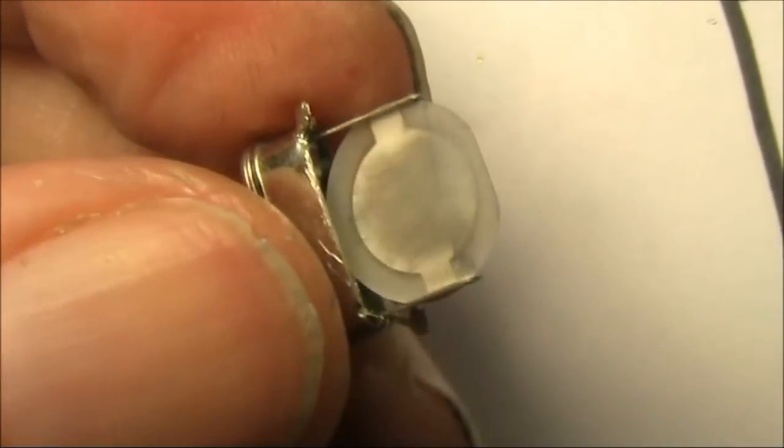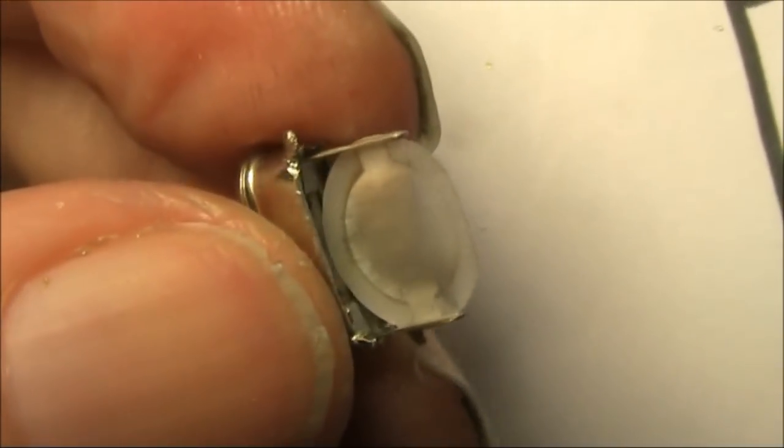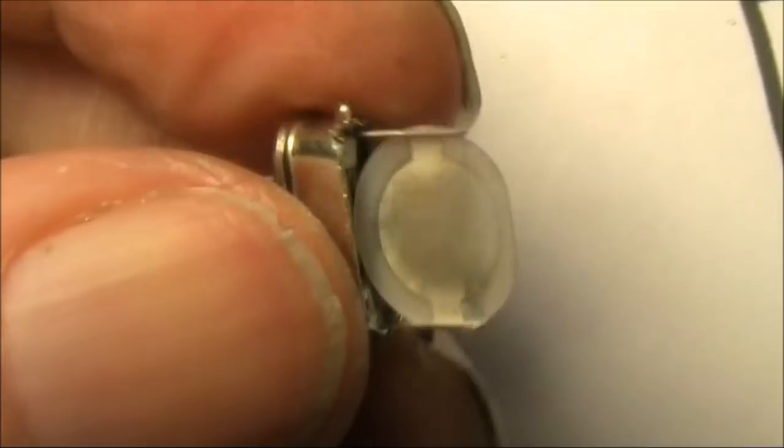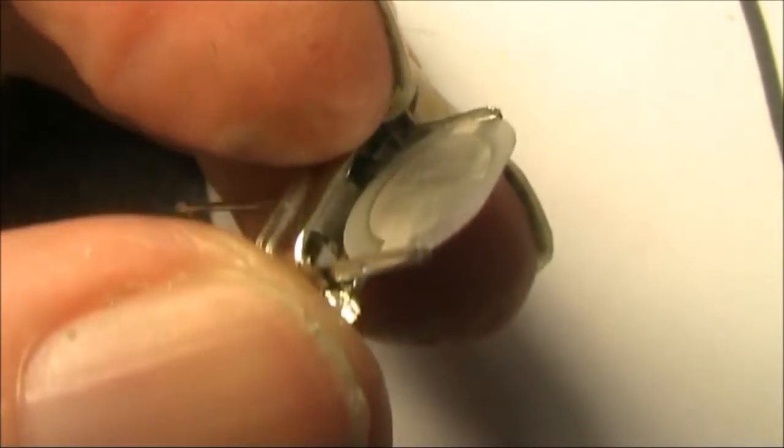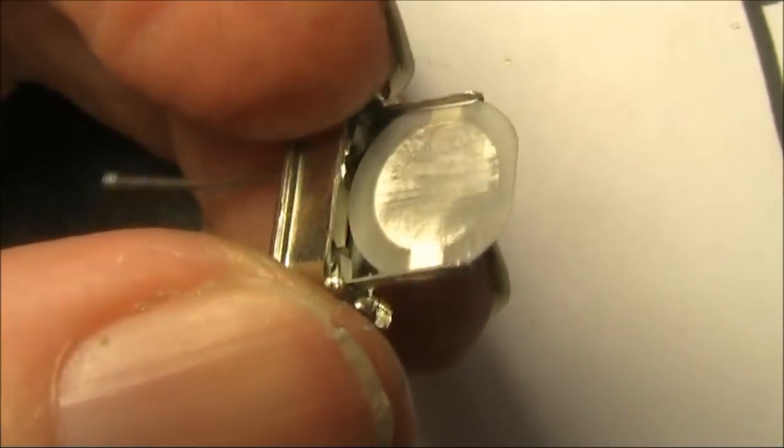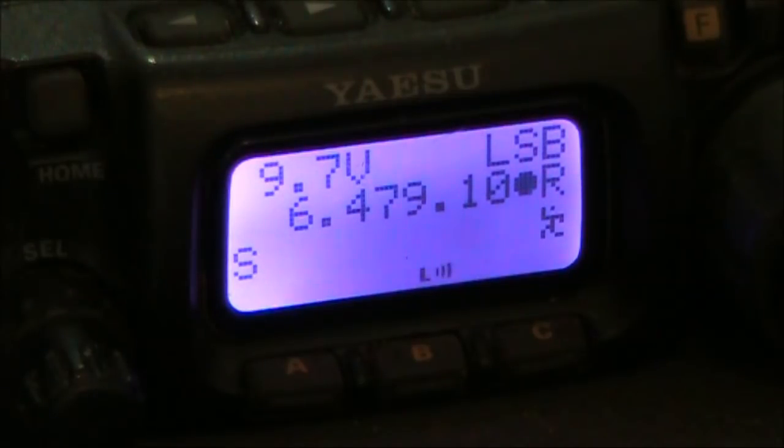This is after about 100 rubs per side. As you might just be able to see, a little bit of the plating seems to have eroded. This indicates that it's very thin indeed. We'll keep rubbing and see how high we can get this crystal.